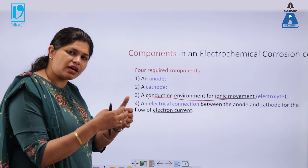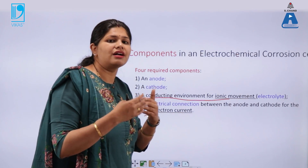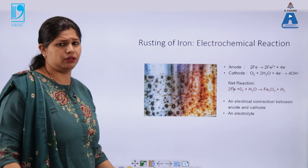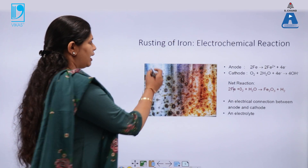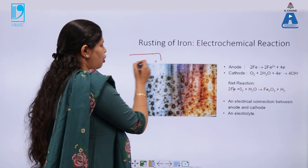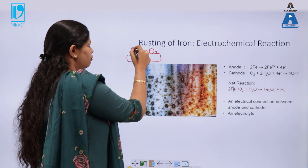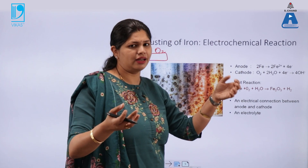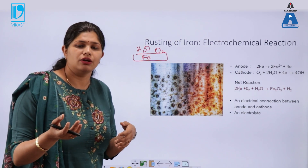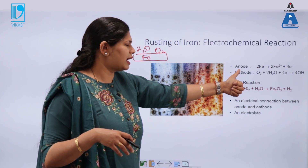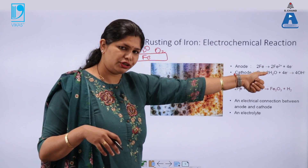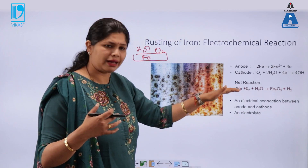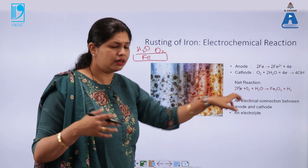An electrical connection starts between these two ends and the metal starts depleting. Let us take the example of rusting of iron. When you have an iron metal in the presence of oxygen, water, and a slightly acidic medium, it gets converted into the hydroxide, and that hydroxide on further heating gets converted into iron oxide. The anodic part is when iron is converted into ferrous salt with four electrons liberated. The cathodic part is when oxygen combines with water and accepts those four electrons to form hydroxide ions.